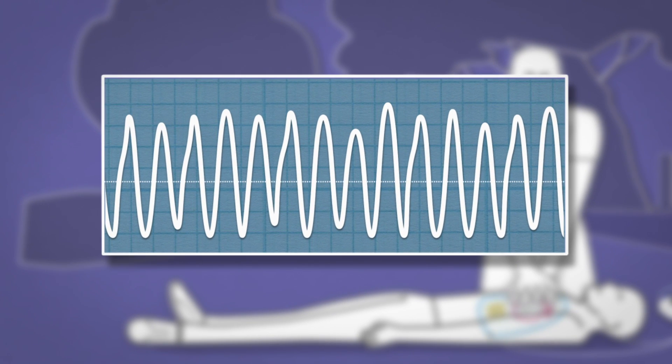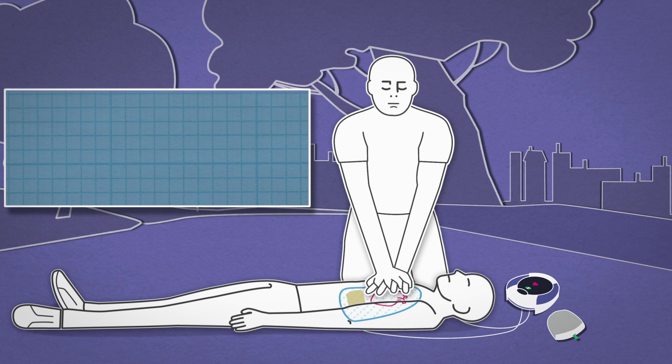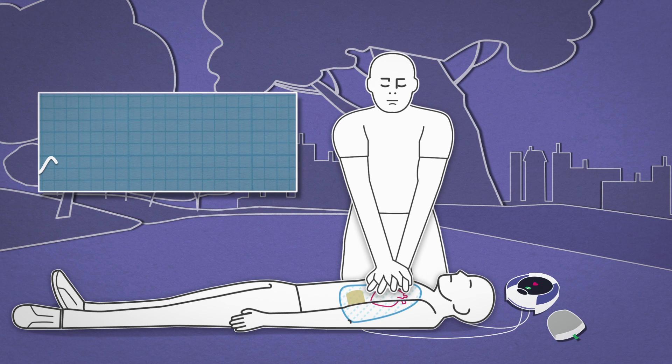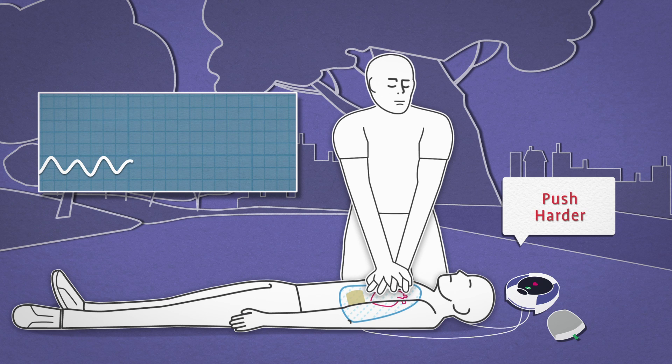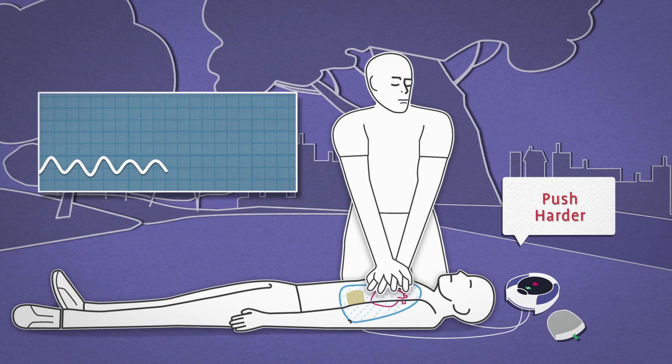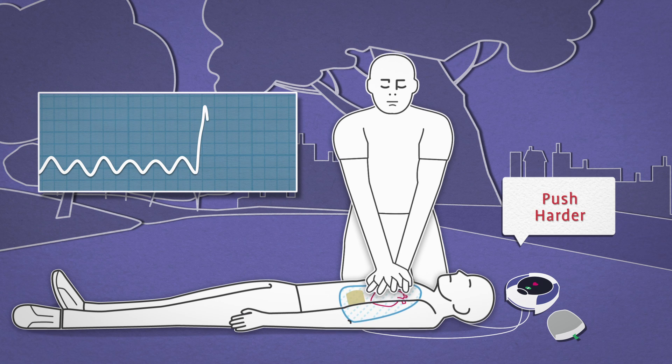The compression rate is determined by counting the deflections. When the rescuer compresses the patient's chest, the force is reflected on the ICG waveform. The greater the force, the greater the deflection.